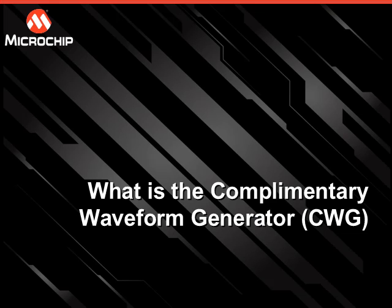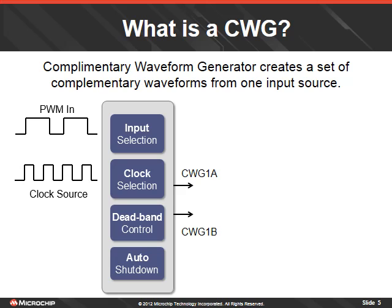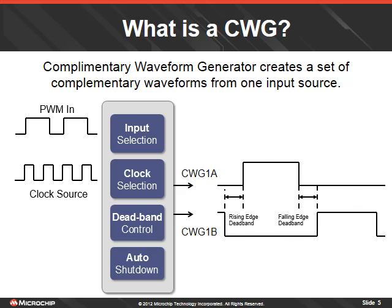The Complementary Waveform Generator is a peripheral inside select PIC-MCU devices. It creates a set of complementary waveforms from one input source. Various input sources are available — for example, a PWM signal can be selected. A clock source is selected to run the peripheral. Dual complementary waveforms are produced based on the input source and can have rising and falling deadband delays.